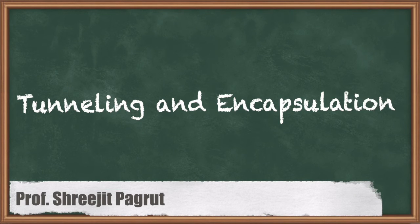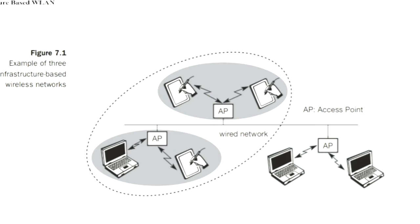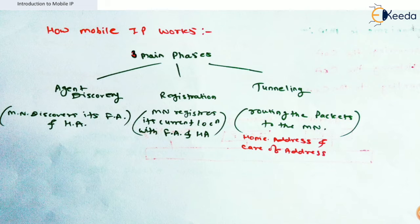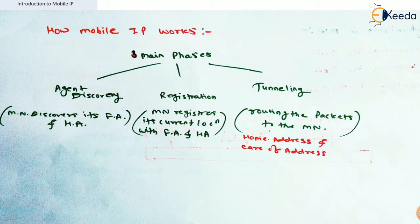Welcome. We have initiated the third unit of this subject, discussing Mobile IP. Today's topic is tunneling, the third phase of Mobile IP. We have seen agent discovery where agent advertisement happens and the agent gets discovered by the mobile node. In the second phase, we discussed the registration phase, how the mobile node registers itself with the foreign agent and home agent.